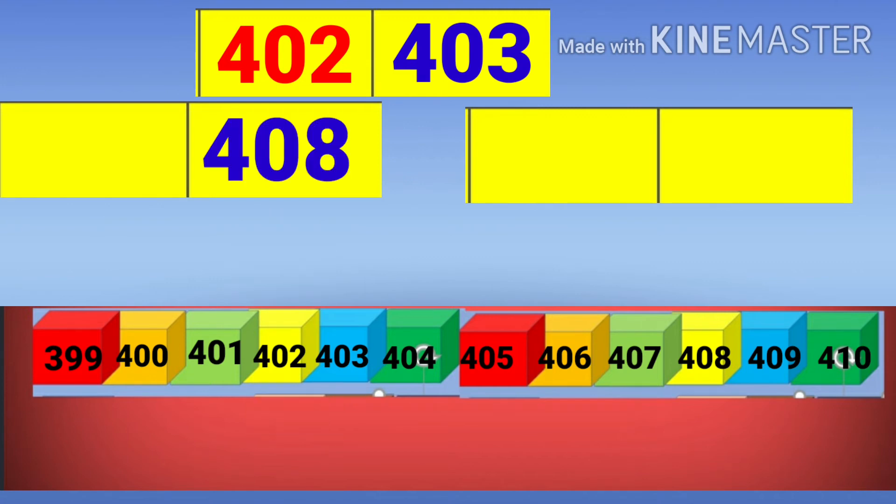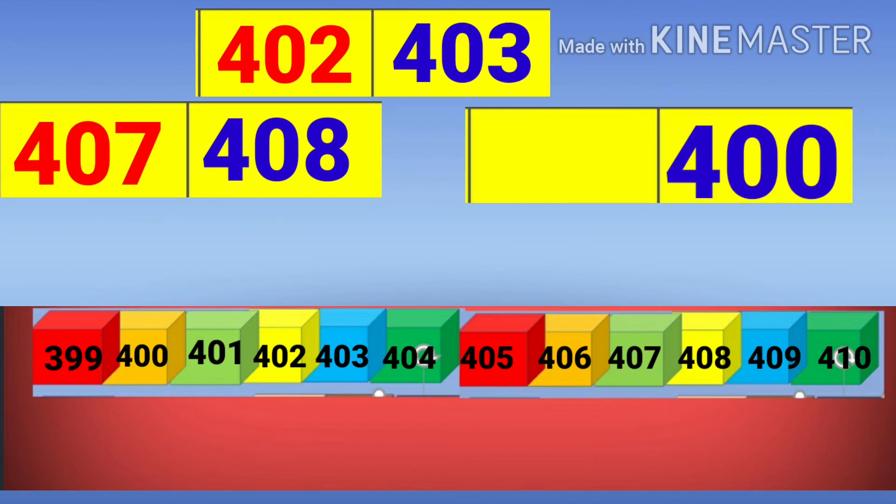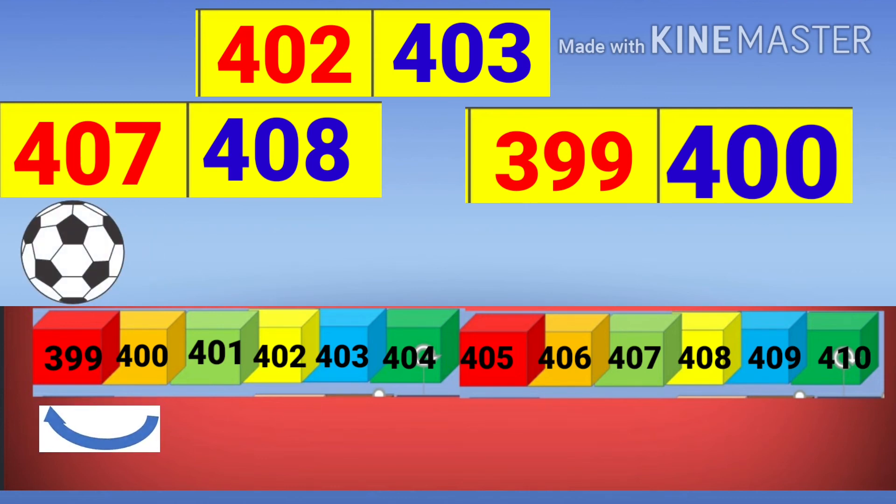What number comes before 408? 407 comes before 408. What number comes before 400? 399 comes before 400.